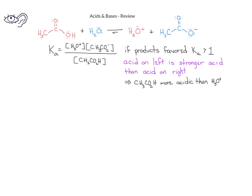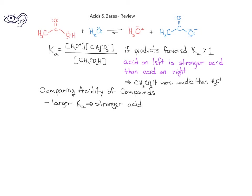As we study organic chemistry, it will be useful to have a way to compare different compounds for their acidity. We could look at the Ka value for different compounds when they're dissolved in water. However, organic chemists like to use a different value, the pKa, to compare the relative acidity of different organic compounds. The pKa is found by taking the negative log of the Ka value. Overall, we see that the smaller the pKa value, the stronger the acid.